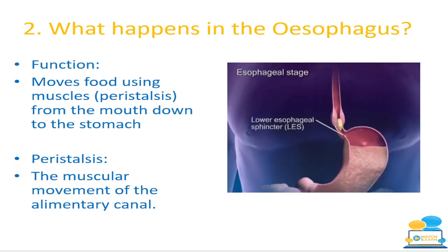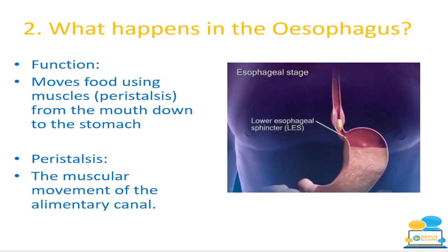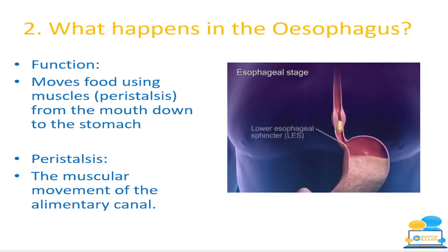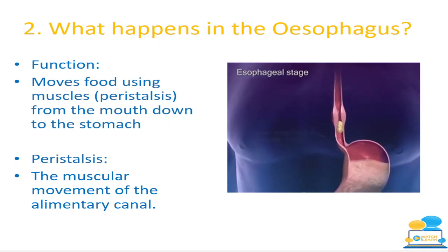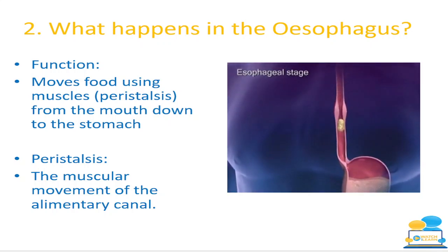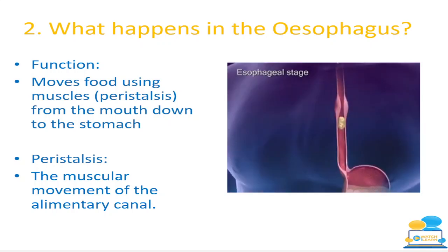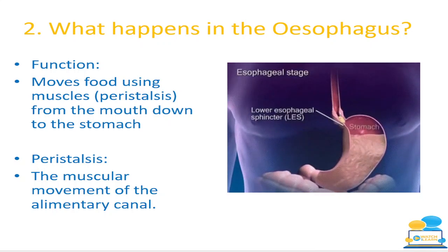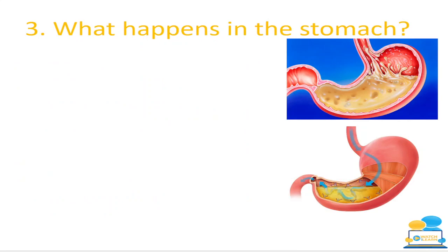Peristalsis is the muscular movement of the alimentary canal — constant muscle contractions pushing food downward, like the way your heart constantly beats. You can actually eat upside down because of peristalsis. If you can name peristalsis when discussing the esophagus, you will impress your examiner and could achieve a distinction level for this type of exam question.